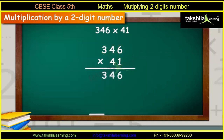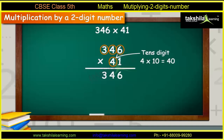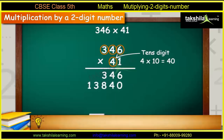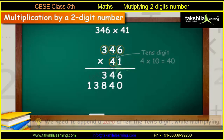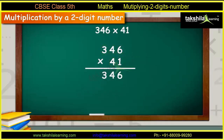Place this number as shown. Now, let us multiply the multiplicand 346 with the tens-digit of the multiplier 41, which will be 346 into 40, which comes out to be 13,840. Please note, we need to append a zero after the tens-digit while multiplying.